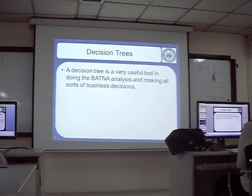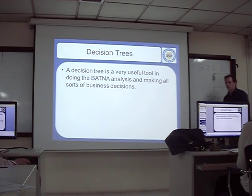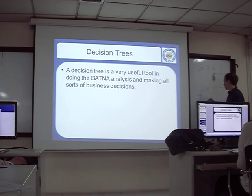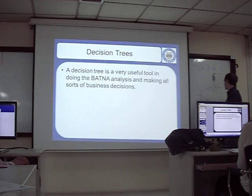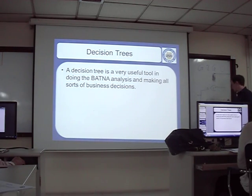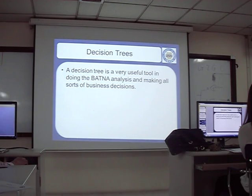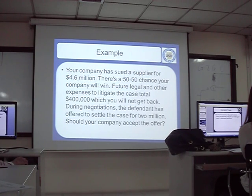A decision tree is a very useful tool in doing BATNA analysis and making all sorts of business decisions. You can use a decision tree for making any decision, but it's especially helpful when we have numbers or figures. It looks like this: you have option A or option B — which one should you take? Option A may have more branches, and B may have more branches, and then even more branches. You decide which is the best decision by comparing your BATNA against what you've been offered in the negotiation.